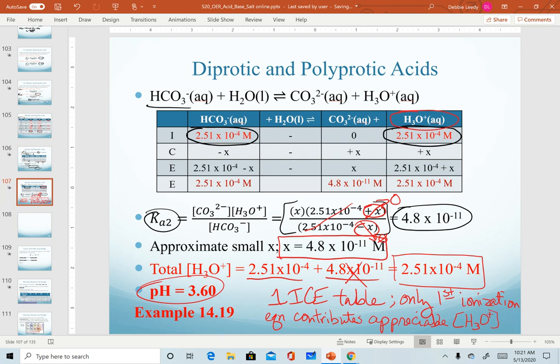And so again, the two takeaways are this one, that pH can still actually be solved from just one ICE table because of the degree of dissociation in successive equations, and that your first K value is always going to be the largest, and they get successively smaller as we remove protons.